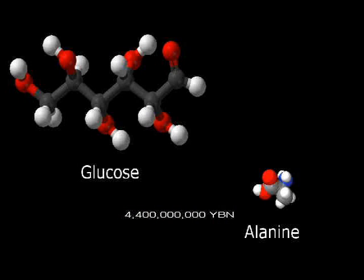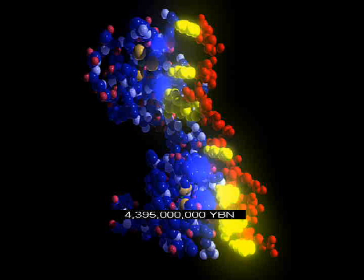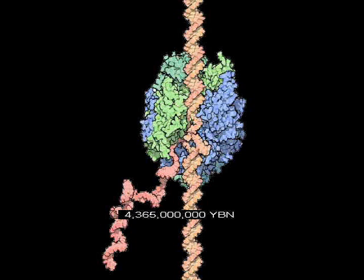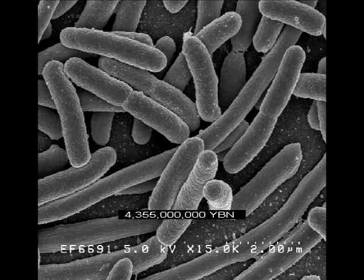Larger molecules form on Earth like amino acids and sugars. Nucleic acids form or arrive on Earth. RNA assembles amino acids into the first proteins. A protein copies nucleic acids. The first cell on Earth: a bacterium.